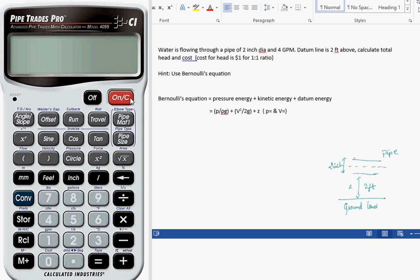So for calculating the pressure and kinetic energy, we need to know the pressure as well as the velocity. By using the available data, we are going to calculate the pressure and the velocity. For a 2-inch pipe, for 4 gpm of flow, the velocity is 0.641667 FPS. We mark it over here for our convenience.